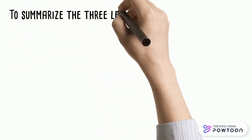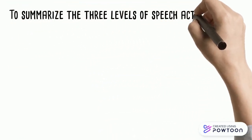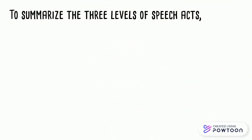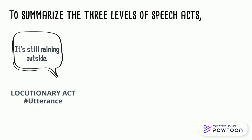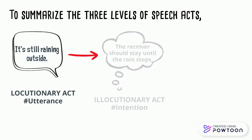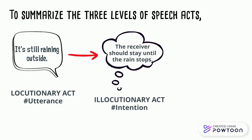To summarize the three levels of speech acts, let us take a look at this. The utterance 'it's raining outside' refers to the locutionary act. For the illocutionary act, the speaker wants the receiver to stay until the rain stops.